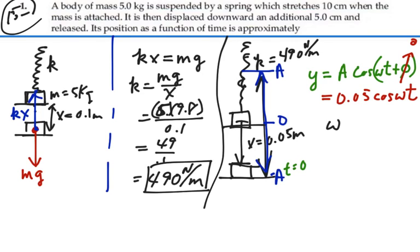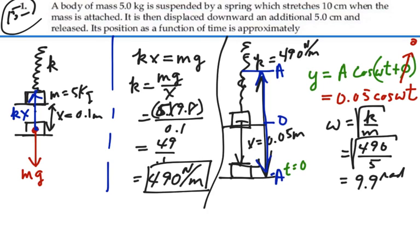Now, omega is equal to the square root of k over m, and in this case, our k is 490. The m that we're using for this is 5 kilograms. So we have omega is the square root of 490 divided by 5, which would be the square root of 98, and that is 9.9 radians per second.